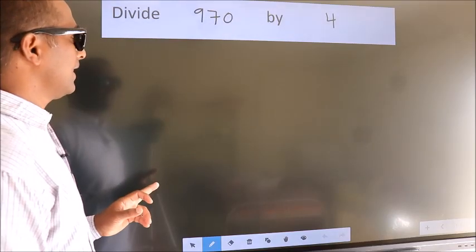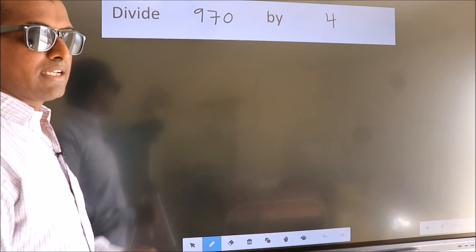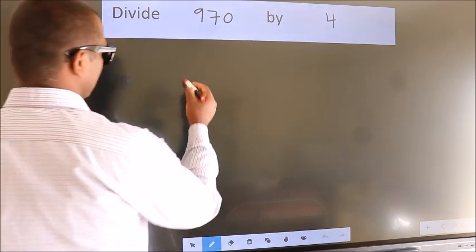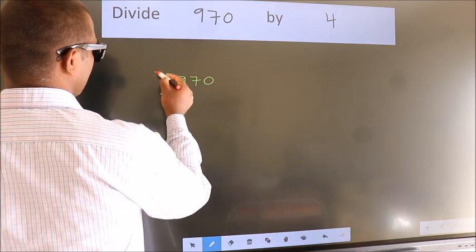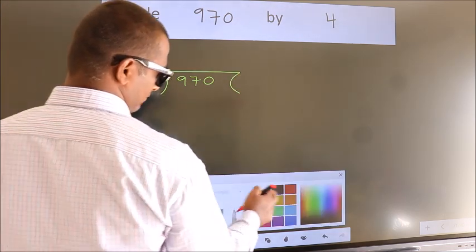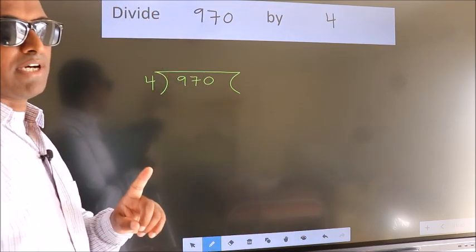Divide 970 by 4. To do this division, we should frame it in this way. 970 here, 4 here. This is your step 1.